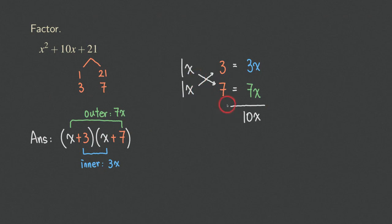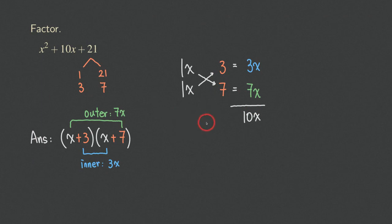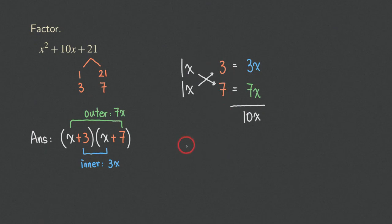We call this trial and error because we try out combinations to check whether they work. Sometimes it doesn't work, and when it doesn't, we don't need to get frustrated — we just keep trying until it works. Unless the problem is not meant to be factorable over the set of integers, in which case we cannot factor it. That's it for this problem. We'll do more problems next time to show how this method works. Thank you for watching — see you next time.